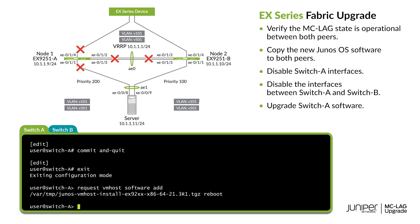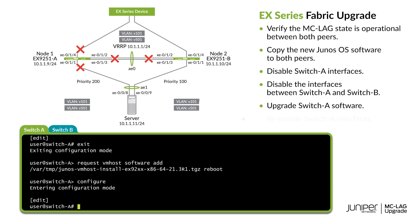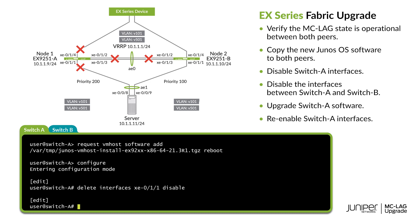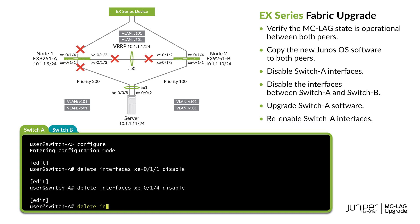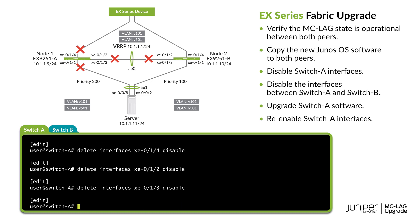Log back in and enter into configuration mode. We can now redirect the traffic from switch B back to switch A by re-enabling the server-facing and uplink interfaces on switch A.